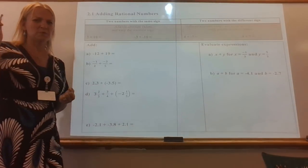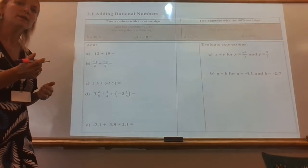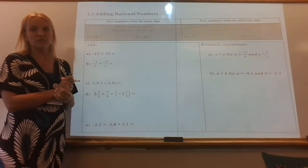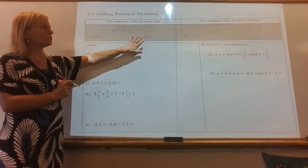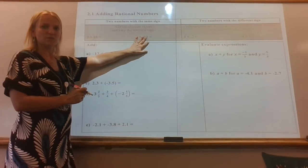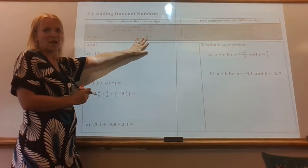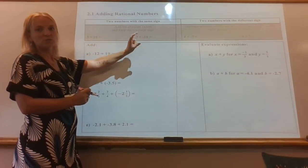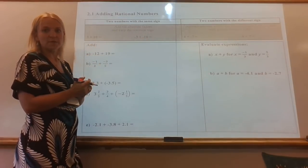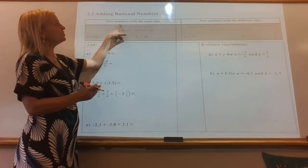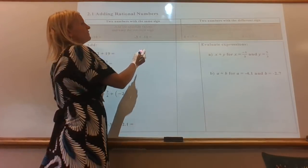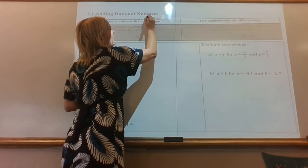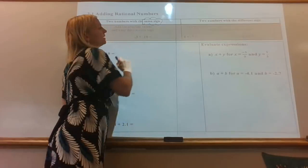It wouldn't be as easy to use our number line or our balloon analogy for this. So what we do need to know is what are the rules? How does it work when we're adding rational numbers? So there are two possible things that can happen. You can either add two numbers that have the same sign — let's put a big bubble around 'same sign.'